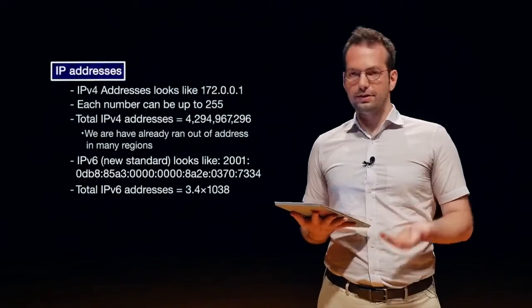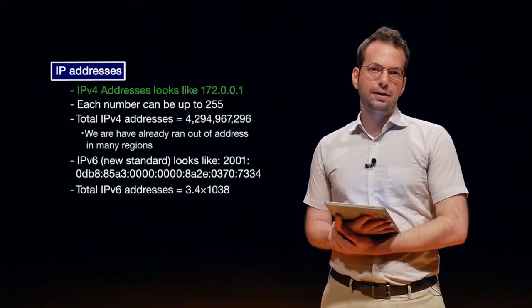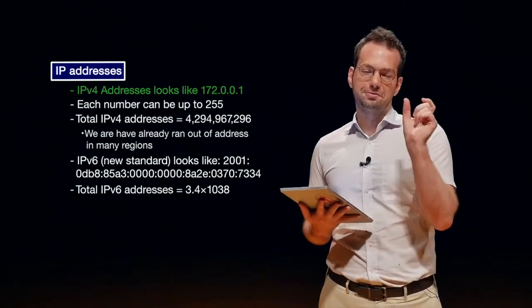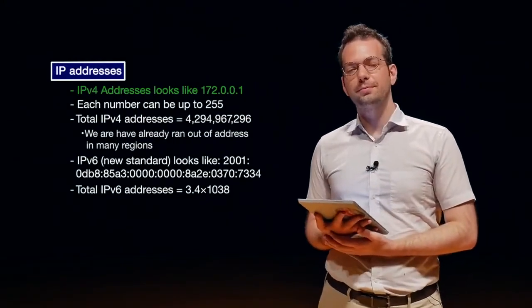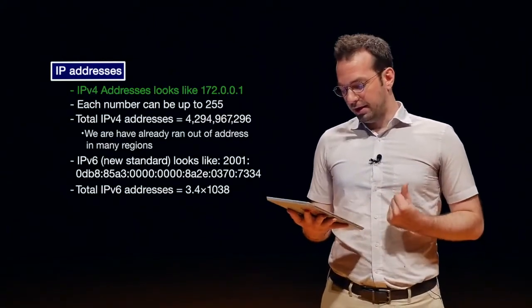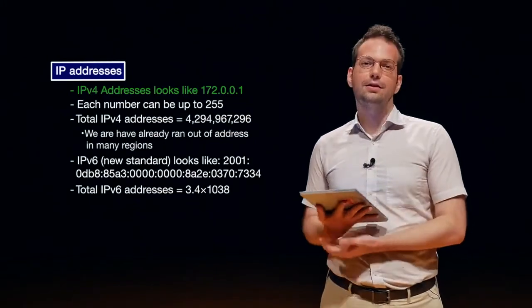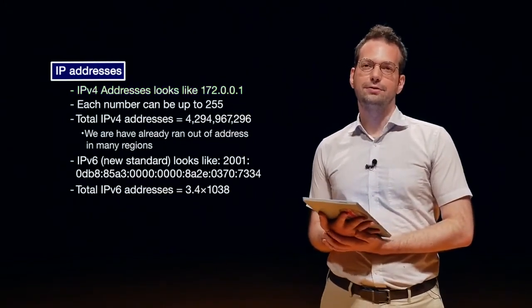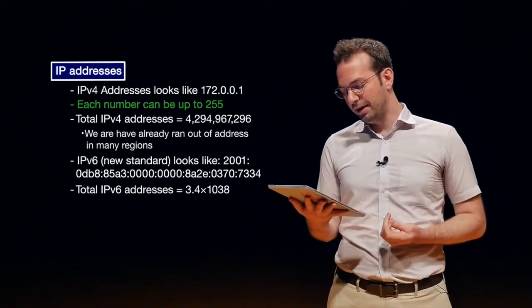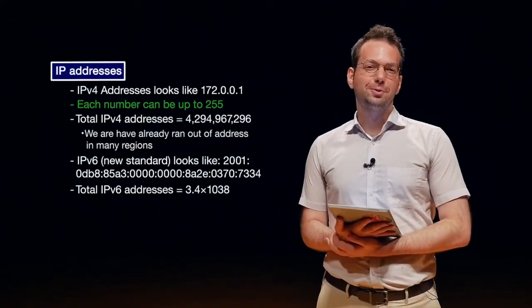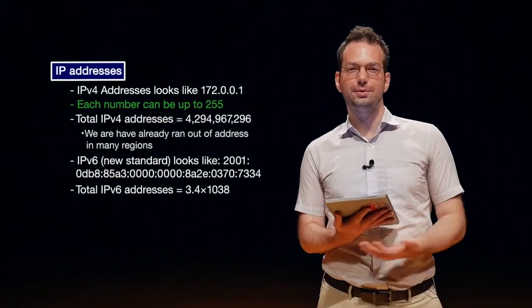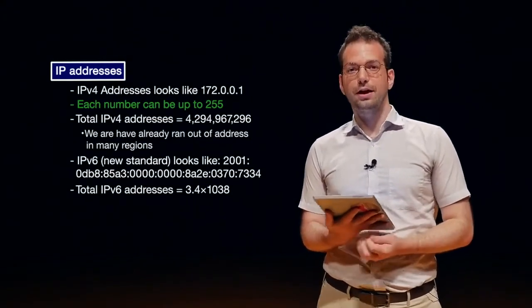If you look at the notes, I talk about what IP addresses look like. We're currently using IP version 4 addresses, which have four numbers with periods in between — that's how you normally see them. We'll talk more about IP addresses in the assignment. Each number or octet in an IPv4 address can have a number up to 255. The very important thing about IP version 4 addresses is that it's a quite old standard and we're actually running out of IP addresses.